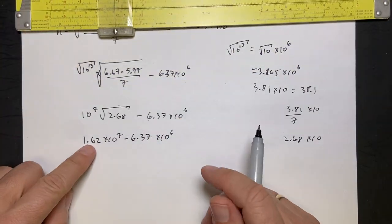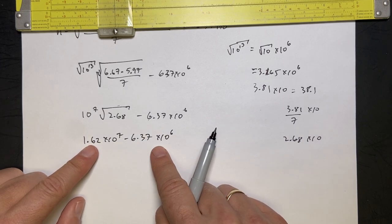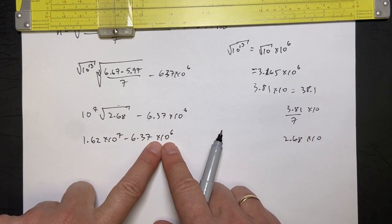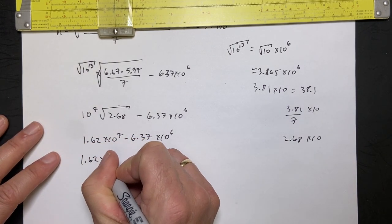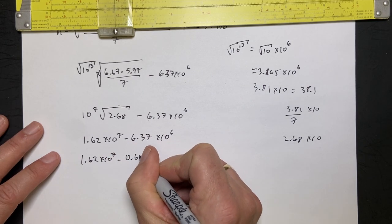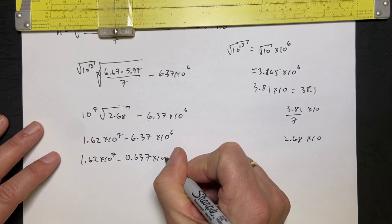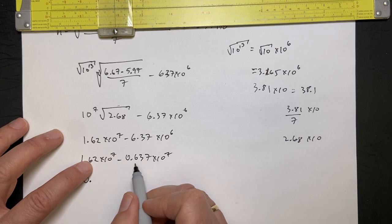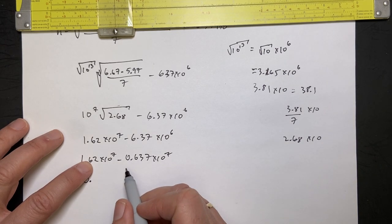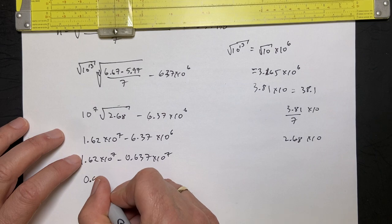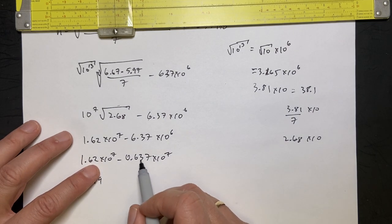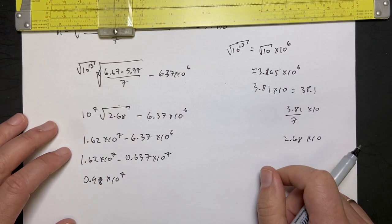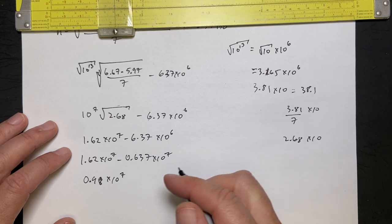So I get 1.62 times 10 to the 7th, minus 6.37 times 10 to the 6th. Okay. Now I can subtract these. Now, here we have to do real subtraction. So I'm going to actually subtract this by making this 10 to the 7th. So I'm going to say 1.62 times 10 to the 7th, minus 0.637 times 10 to the 7th. Now they have the same exponent, so I can subtract these, and I get 0.99, is that right? Close to it. If I use that 4, this is 9, 8 times 10 to the 7th. And I think that's my answer.